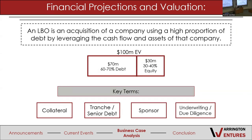The LBO involves acquiring a company using both debt and equity. The question that comes up repeatedly is: what's more expensive, debt or equity? Equity is more expensive — debt is cheaper because you can pay it out over time. Key LBO terms include collateral — who gets paid out first if the company goes under — senior debt, which is similar to preferred stock, the sponsor, underwriting, and due diligence. The sponsor is the person representing the company to the fund when meeting and discussing the deal.